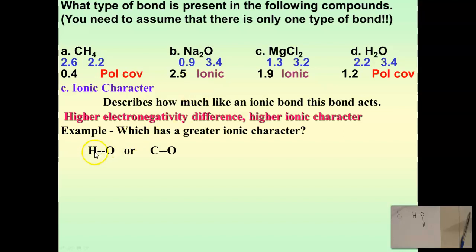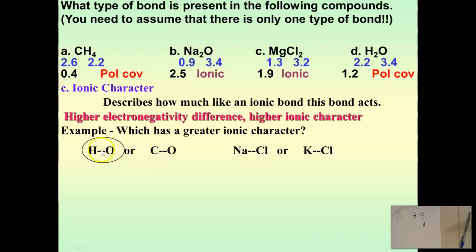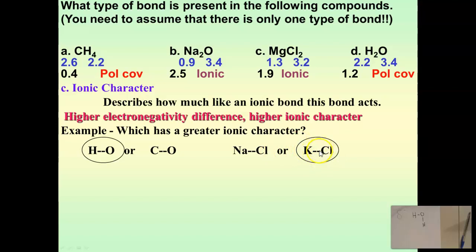Between hydrogen-oxygen and carbon-oxygen, which has greater ionic character? H is 2.2 and O is 3.4 giving a difference of 1.2; C is 2.6 and O is 3.4 giving a difference of 0.8. The larger difference — hydrogen-oxygen — is closer to being an ionic bond, even though both are polar covalent. Comparing sodium chloride to potassium chloride: both are ionic, but sodium chloride has the bigger electronegativity difference, so it has more ionic character — it's the better ionic bond.